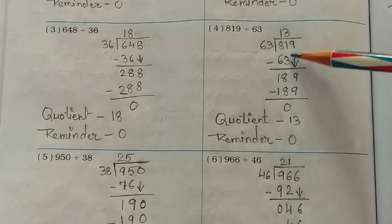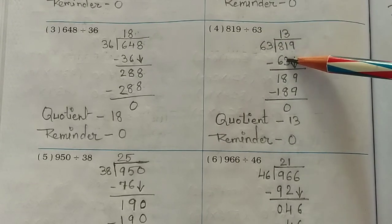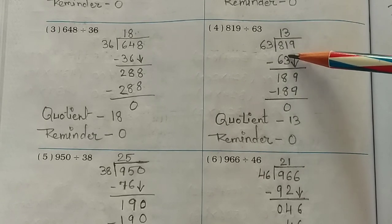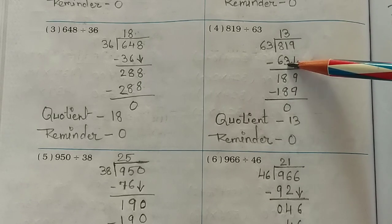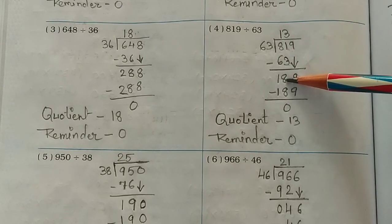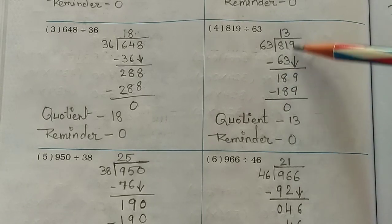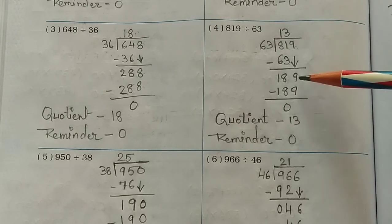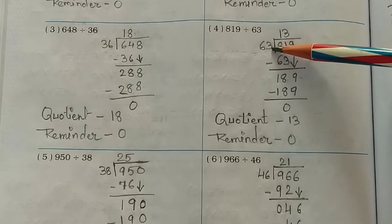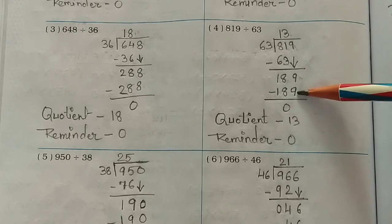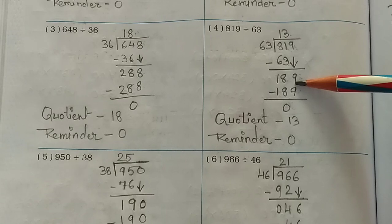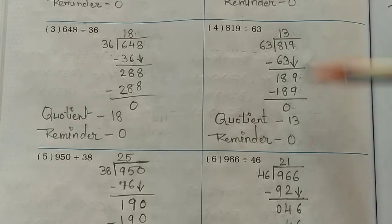Fourth number: 819 divided by 63. Write 63 here. We take 63 ones because 63 twos would be more than 81. Subtract 63 from 81 and you get 18. Bring down the 9 to get 189. 63 threes are 189 exactly, so zero remainder and your answer is 13.